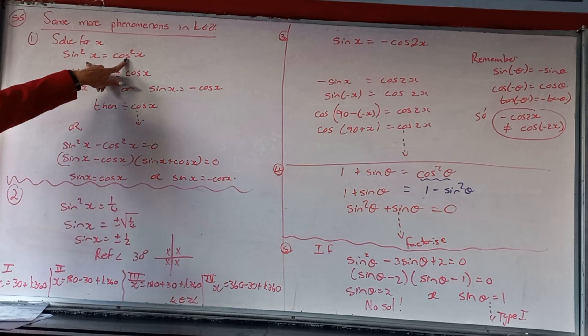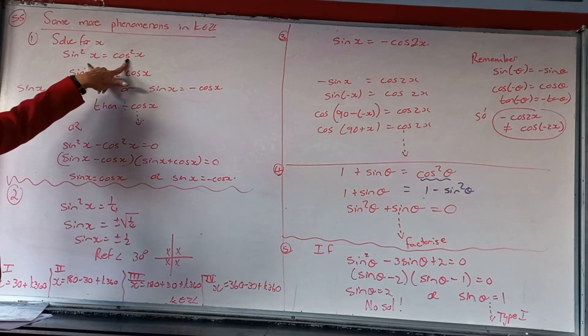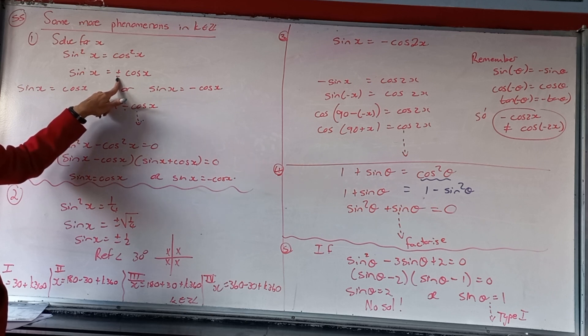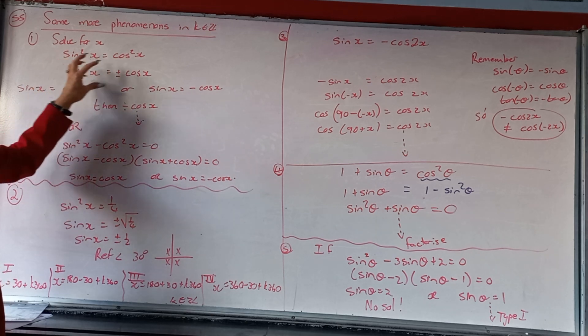First of all, if you have a square, you've always been told that you can get rid of the square by square rooting. Important in that case, if you square root both sides, you're going to have a plus minus in front. That means you've got two separate solutions.